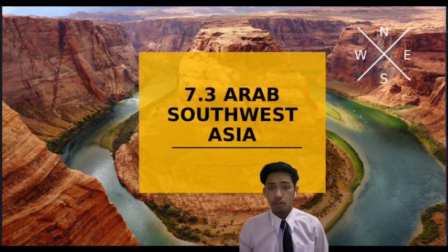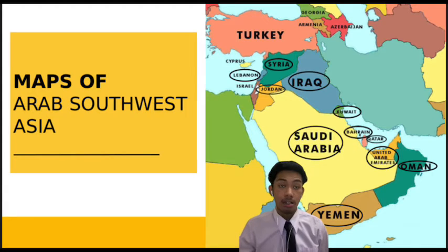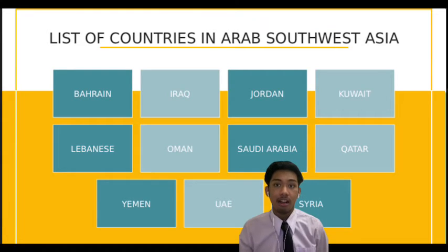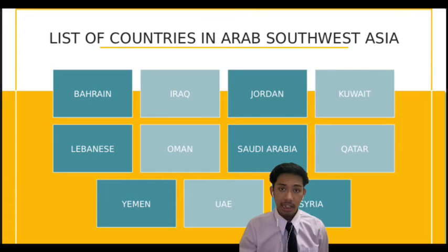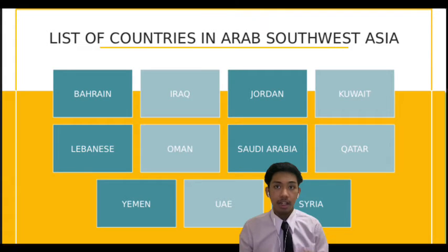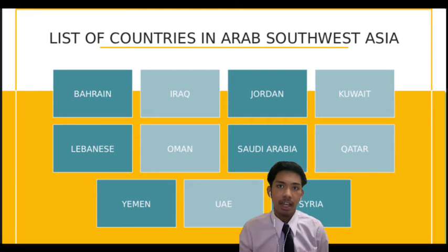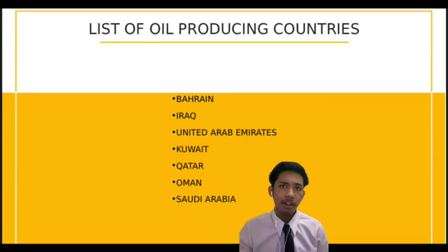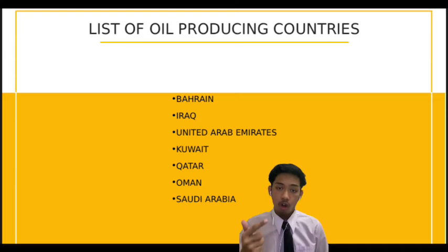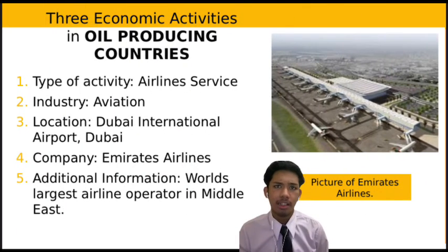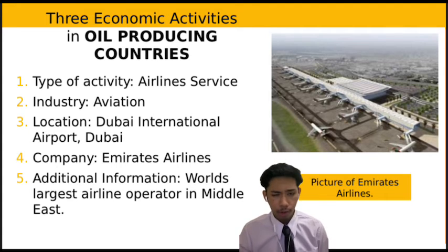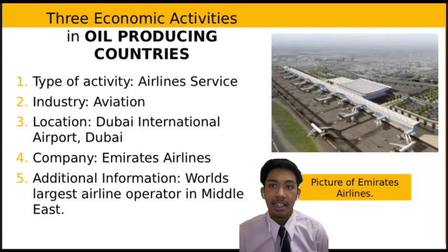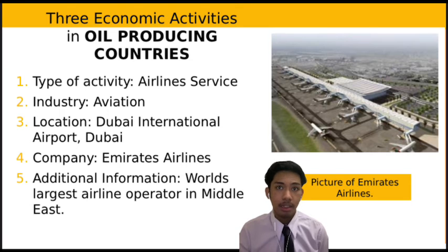Now we move to the last sub-region: Arab Southwest Asia. As you can see on the map, there are many countries listed, including Bahrain, Iraq, Jordan, Kuwait, Lebanon, Oman, Saudi Arabia, Qatar, Yemen, and Syria — 11 countries in total. Economic activities will be specified for the major oil-producing countries — Bahrain, Iraq, UAE, Kuwait, Qatar, Oman, and Saudi Arabia — and the two non-oil or little oil-producing countries.